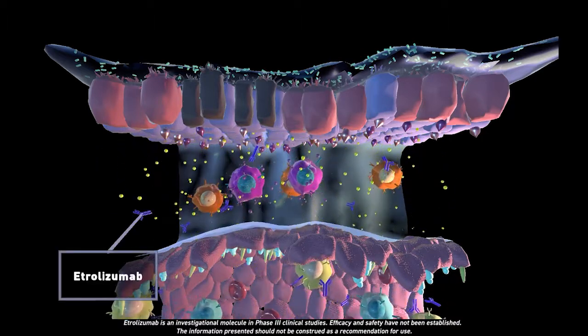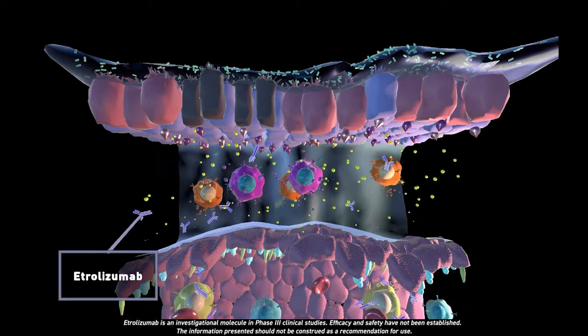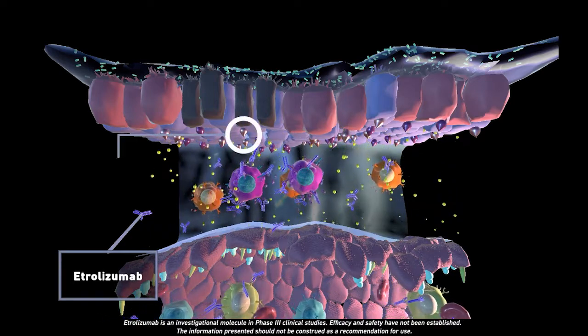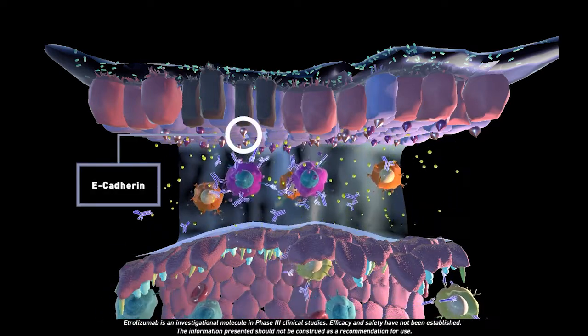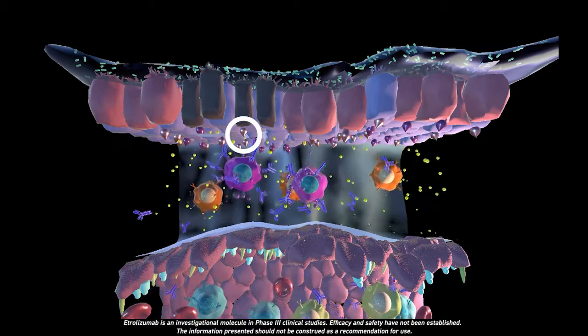Etrelizumab, in its hypothesized secondary mode of action, is predicted to bind to the alpha-E-beta-7 receptors on T cells. It is believed that this may prevent T cells from binding to E-cadherin expressing gut cells and is thought to block their cytotoxic effects.